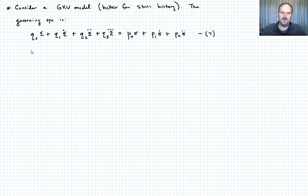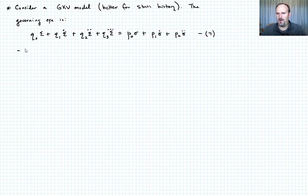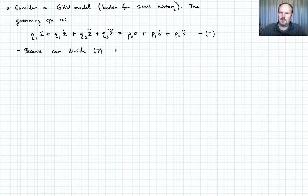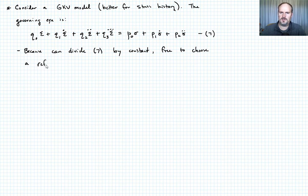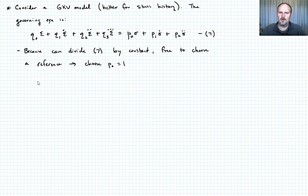This is for a three-element generalized Kelvin model. Because we can divide equation seven by any arbitrary constant without changing it, we're free to select a reference. We're going to choose that reference by picking P naught equal to one.